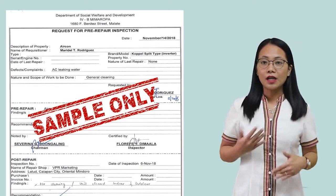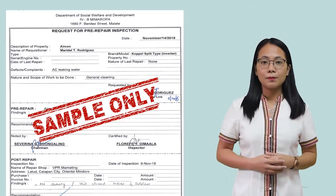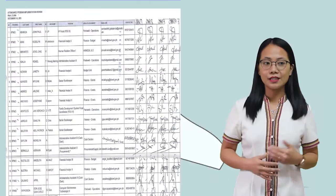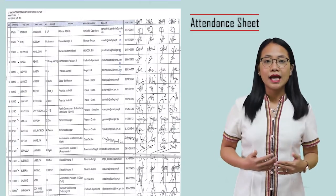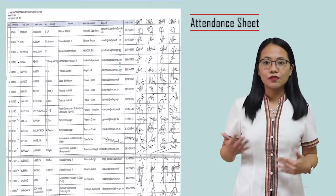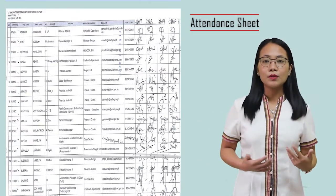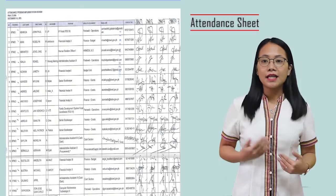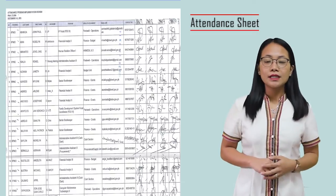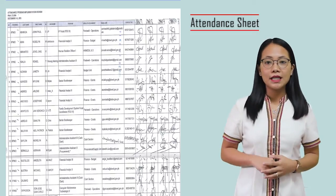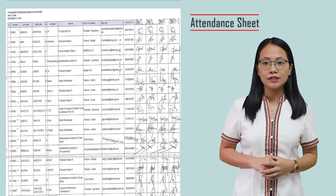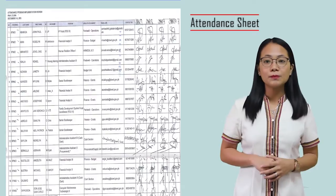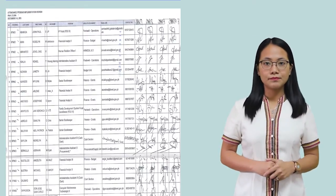A documentary requirement for the payment of the supplier is the Attendance Sheet. This is the list of participants who attended the activity. Take note that the names, date or dates of activity, and signatures must be completely filled up.